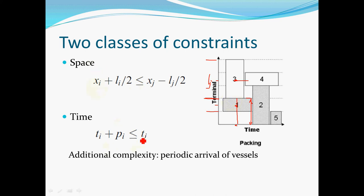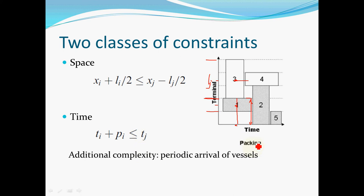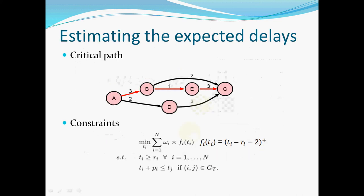For the time dimension, what this means is basically that vessel J could only arrive after vessel I has left. Here the time of arrival of vessel I plus its processing time should be less than the time of arrival of vessel J. Besides these two constraints, we also have the additional complexity of periodic arrival of vessels, because each vessel will likely arrive each week or every two weeks. So we have these three kinds of complexities.